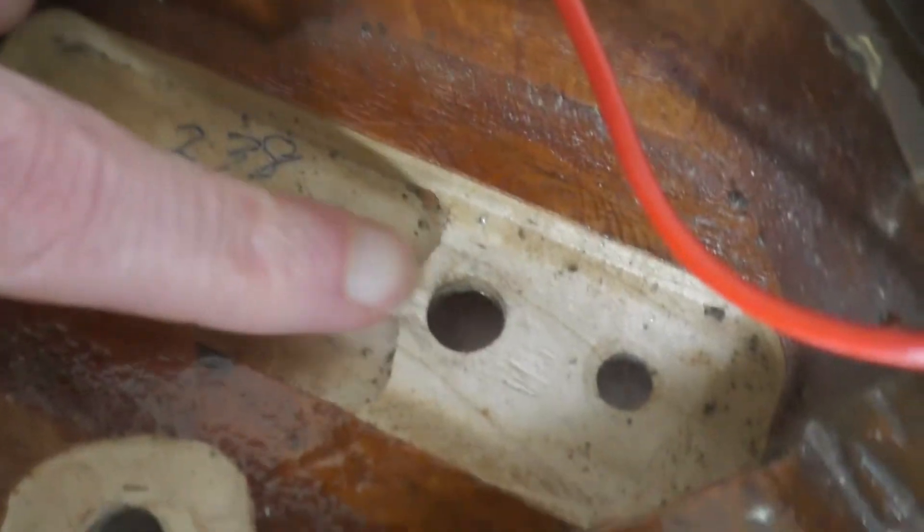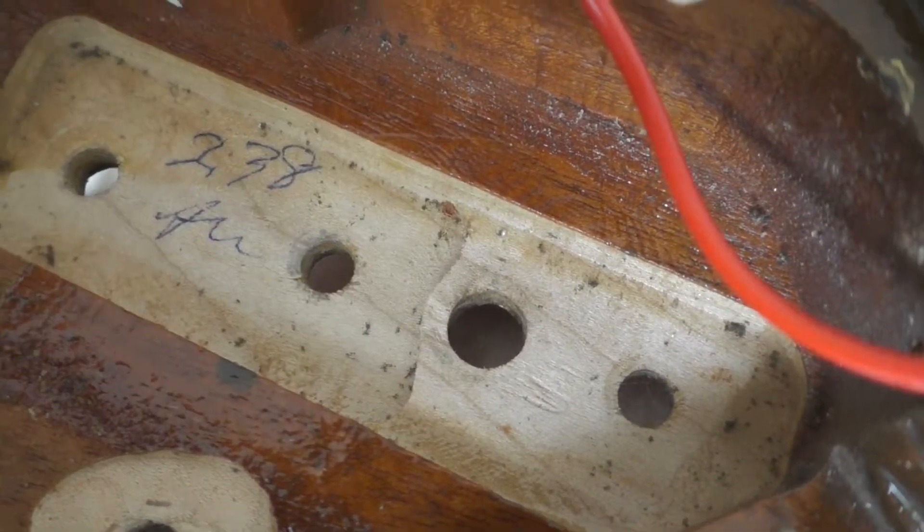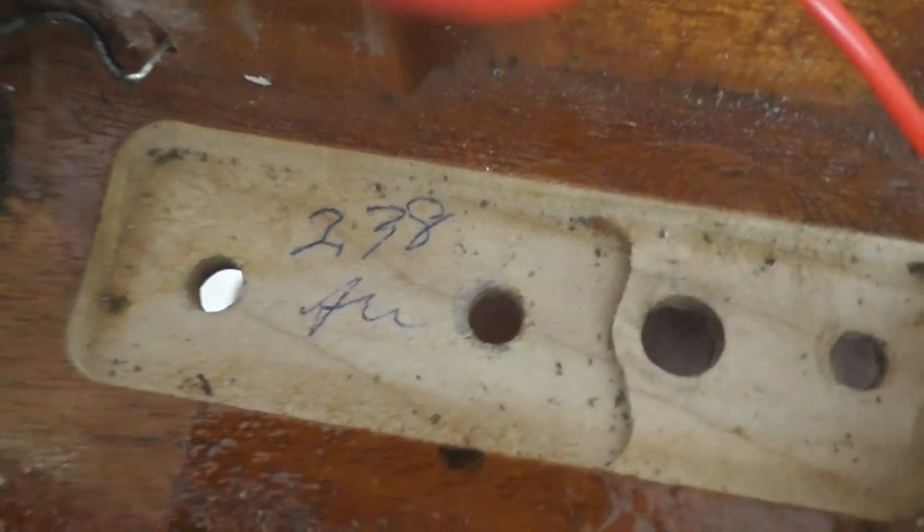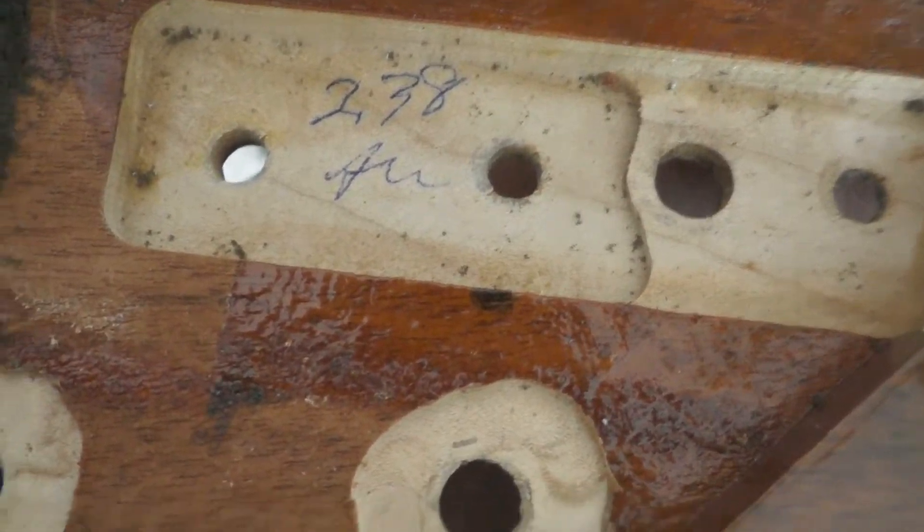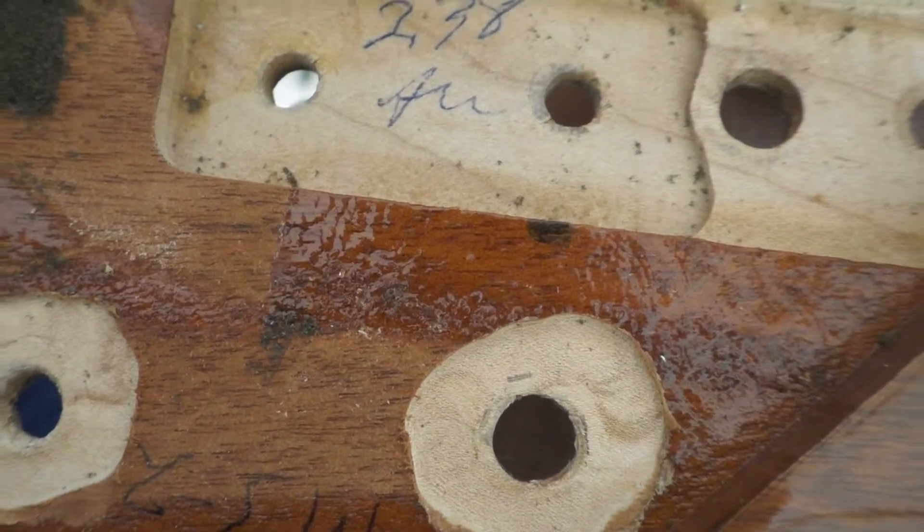This is where the mode switch would go into this hole right here, and that hole is enormous compared to the other ones. That's almost the largest hole that we have here. The tone control hole is also really large, and I'm not really sure why those particular holes are so large.